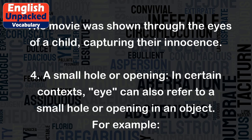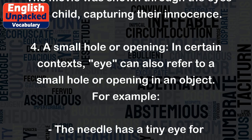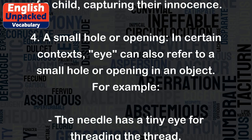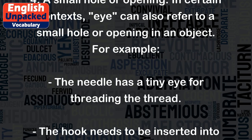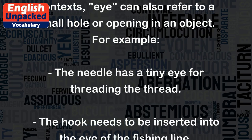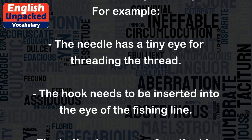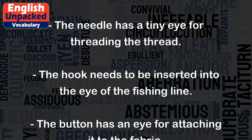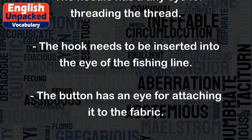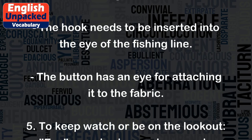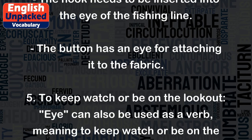4. A Small Hole or Opening. In certain contexts, eye can also refer to a small hole or opening in an object. For example, the needle has a tiny eye for threading the thread. The hook needs to be inserted into the eye of the fishing line. The button has an eye for attaching it to the fabric.